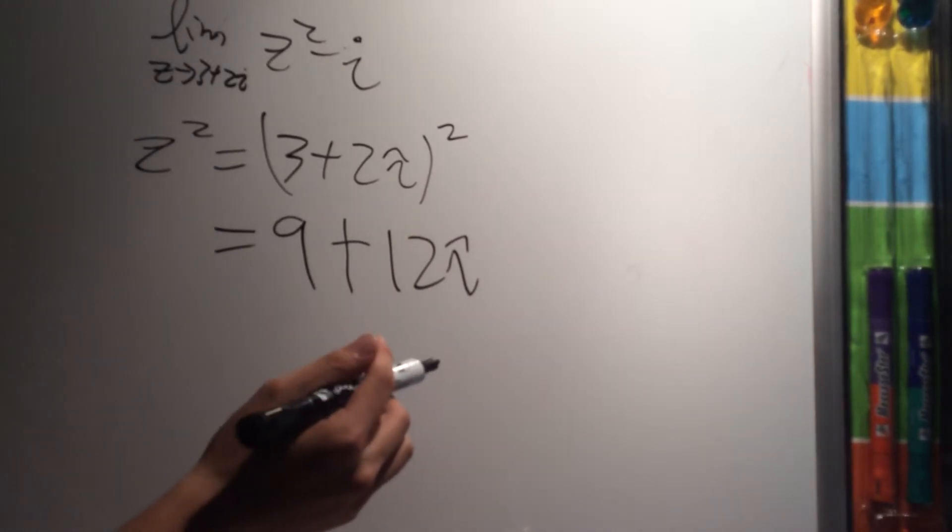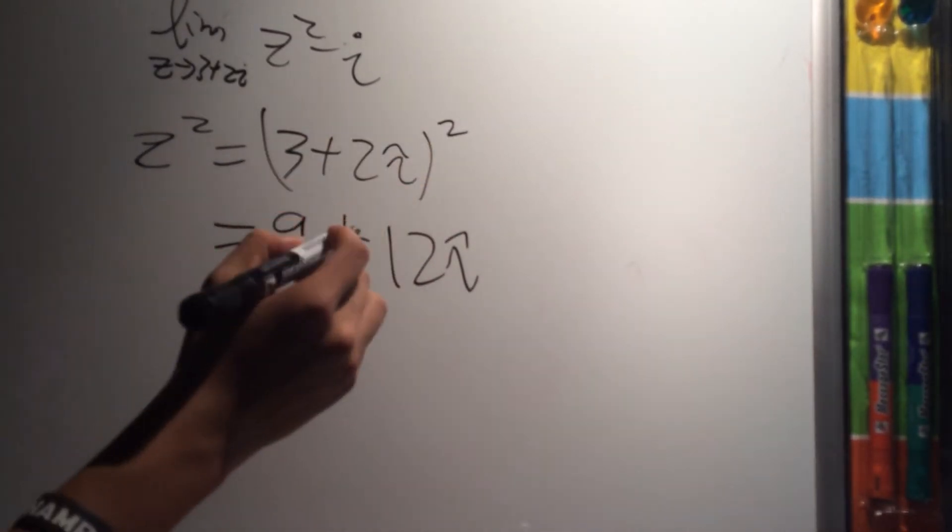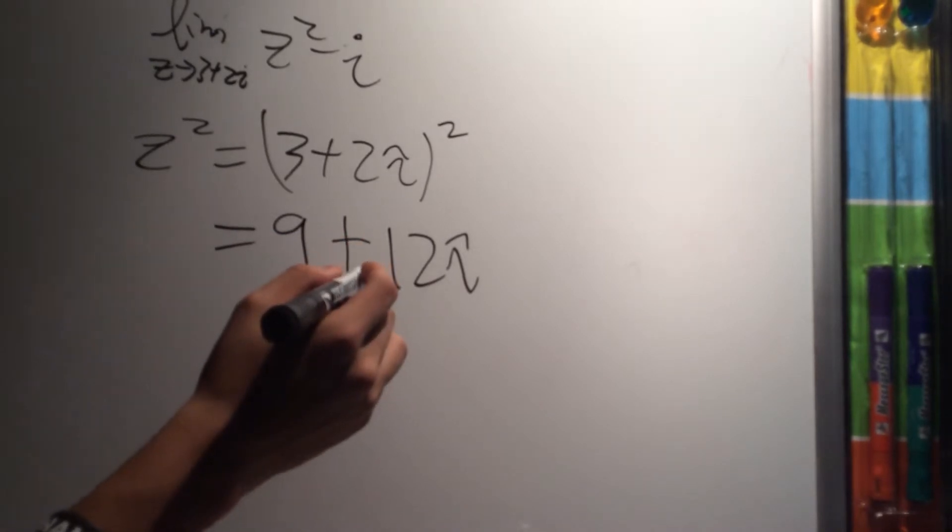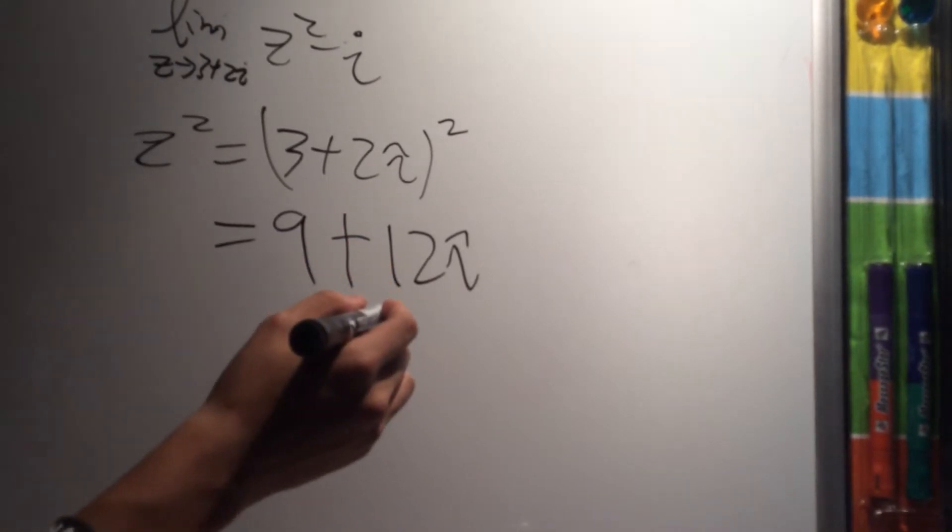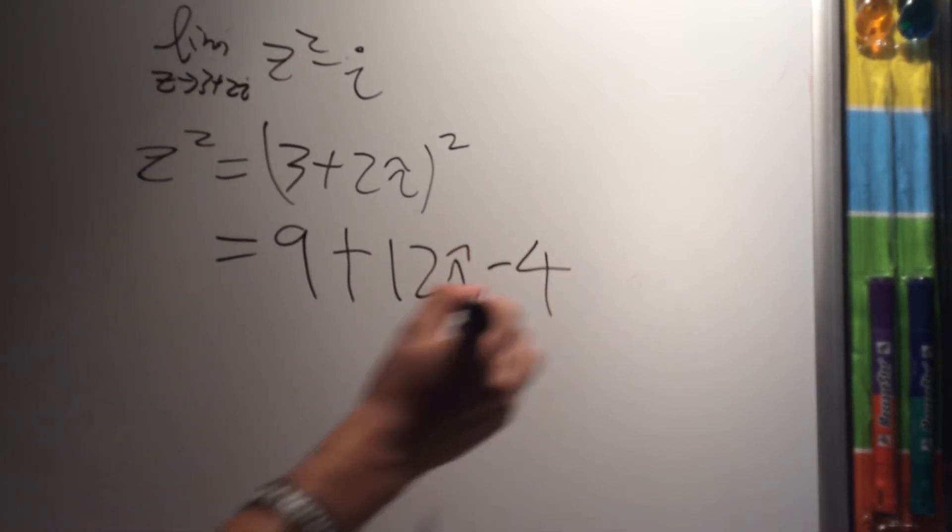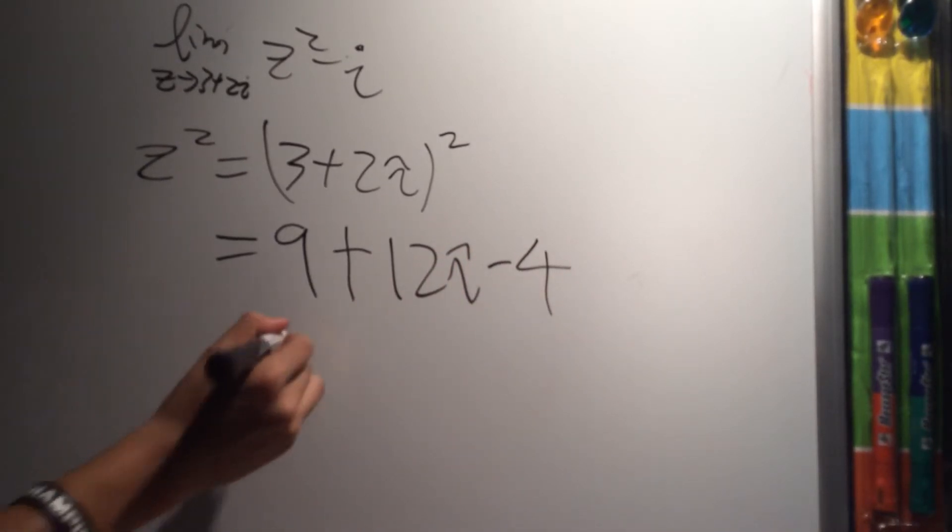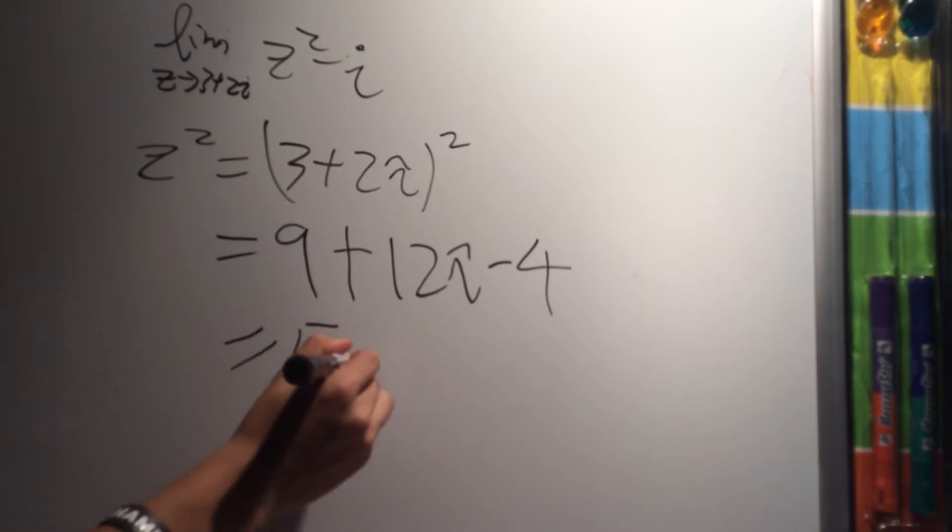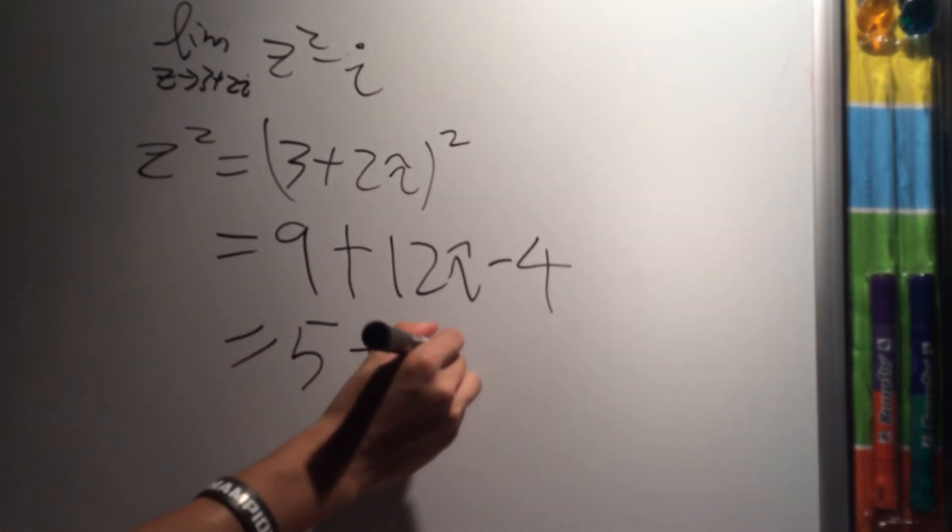And now, the last part we have is 2i squared, which is equal to 4 times i squared, and we know that i squared is equal to minus 1, so we put minus 4 over here. You simplify that, you get 5 plus 12i.